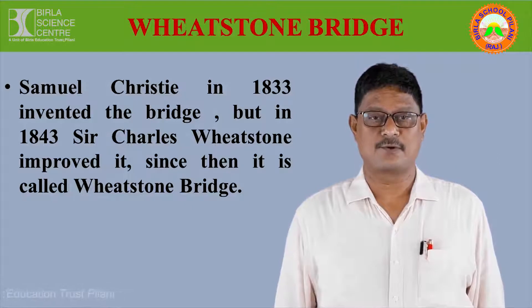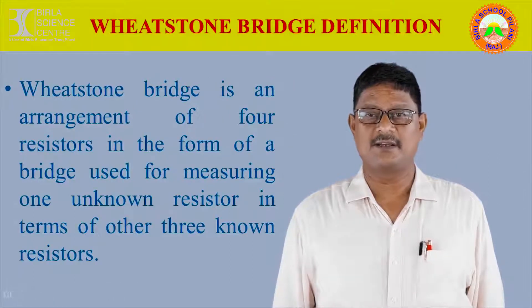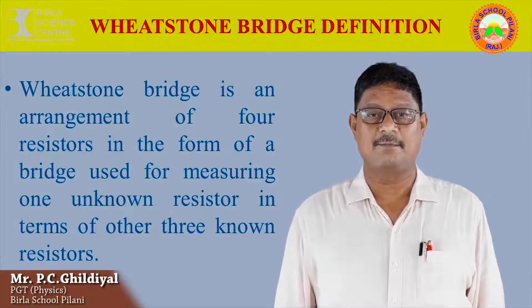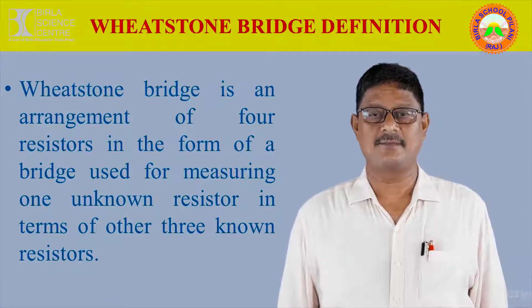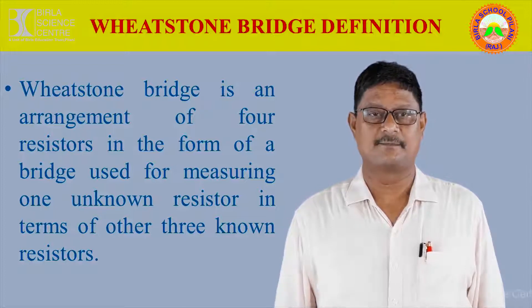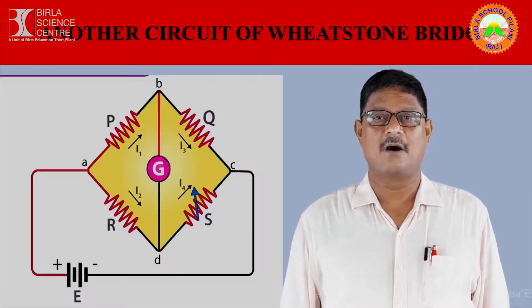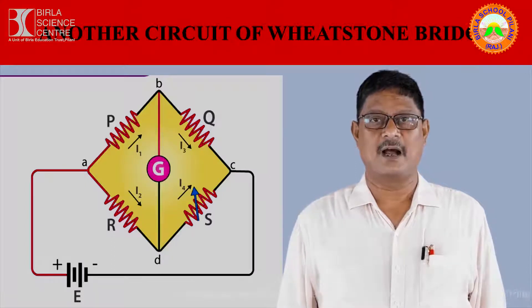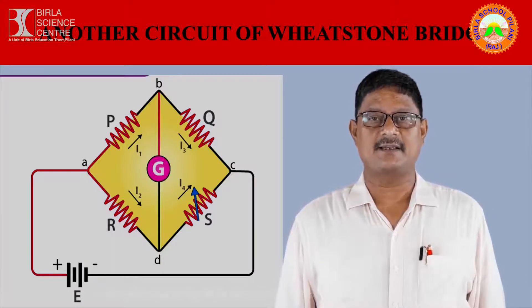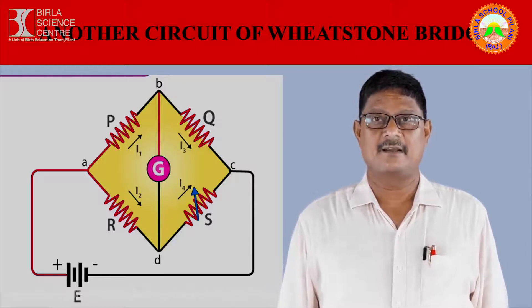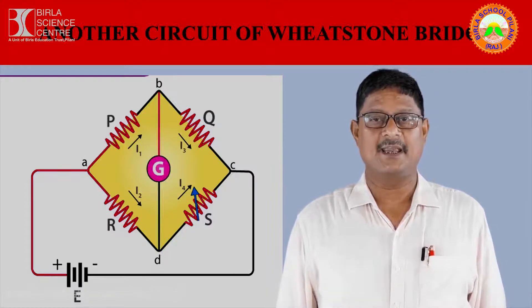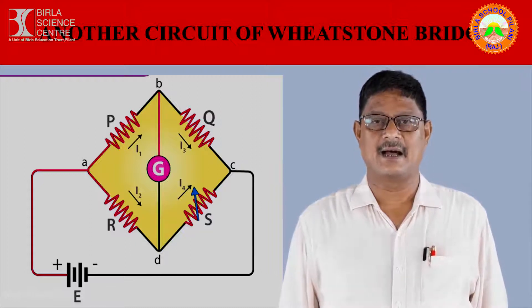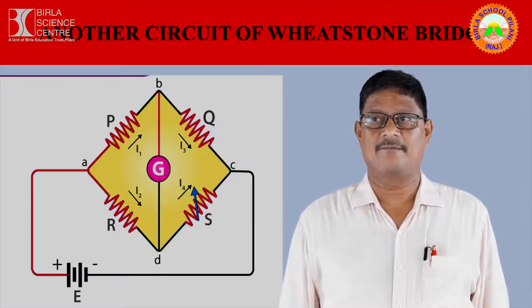The Wheatstone Bridge is an arrangement of four resistors in the form of a bridge, used for measuring one unknown resistor in terms of three other known resistors. This is a very popular circuit where the four arms of a quadrilateral consist of resistances represented by the alphabets P, Q, R, and S, which represent resistances of different magnitudes.